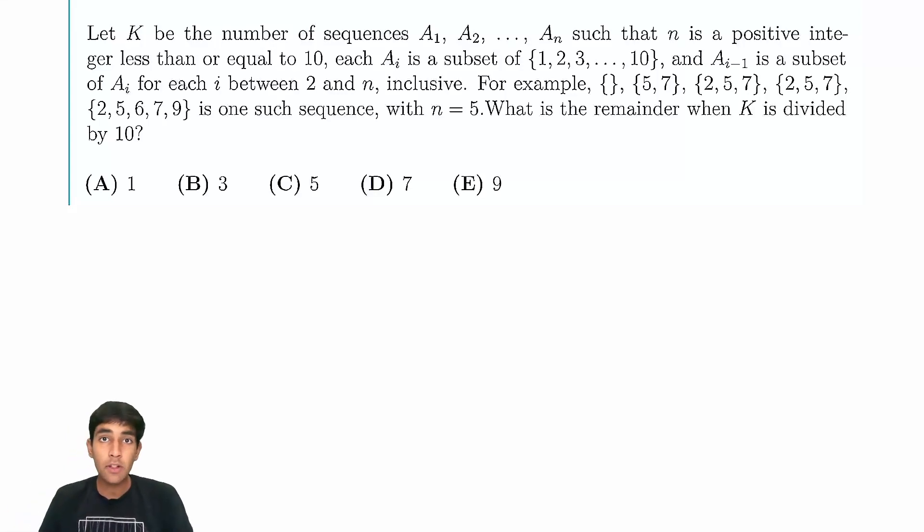Let K be the number of sequences such that n is a positive integer less than or equal to 10, and each A_i is a subset of the numbers from 1 to 10, and each A_{i-1} is a subset of A_i for each i between 2 and n.